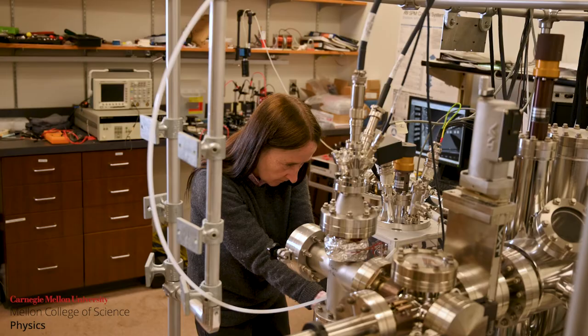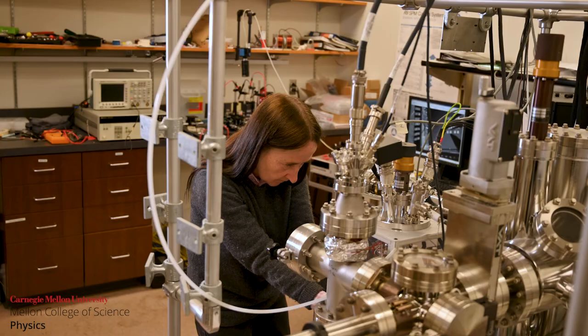Then we use measurements as a function of magnetic field, voltage, and current passed through to see what happens to that nanomagnet. We see whether you can switch it, which would be useful in a storage device, or whether it's switching rapidly in a probabilistic manner, which would be useful for probabilistic computing.